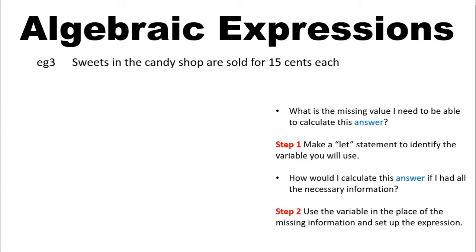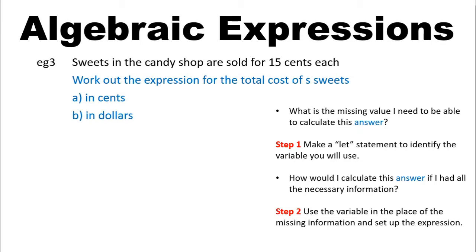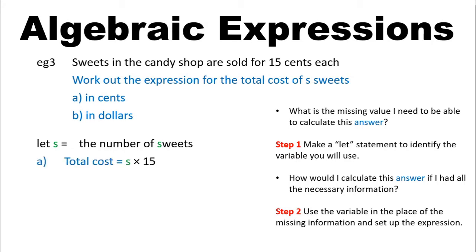Let's try another example. This time our question involves money. Sweets in a candy shop are sold for 15 cents each. Work out the expression for the total cost of S sweets — A in cents and B in dollars. This time the variable was defined in the question. The missing information is the number of sweets. So let S represent the number of sweets. To solve for question A, how would I calculate the cost of S sweets in cents? I would multiply the price by the number of sweets: S times 15. Simplifying as algebra: 15S.